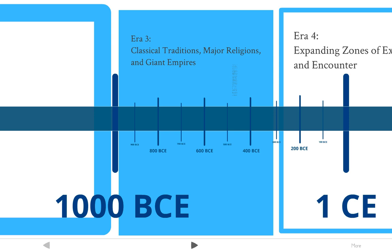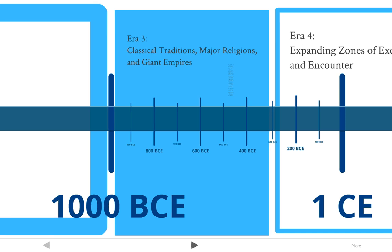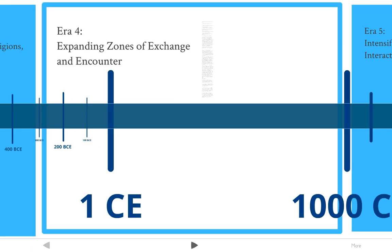Era 3 happens between about 1000 BCE and 300 BCE. We'll be looking at the classical traditions, how some of the major religions spring up, and some of the big empires that come up. In Era 4, from about 300 BCE all the way to 1000 CE, we'll be looking at expanding zones of exchange and encounter — how different countries and regions started trading with each other.